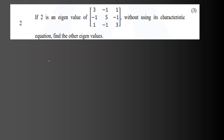If 2 is an eigenvalue of a matrix [3, -1, 1; -1, 5, -1; 1, -1, 3], without using its characteristic equation, find the other eigenvalues.